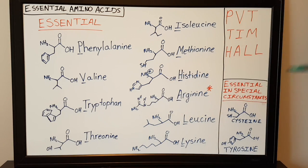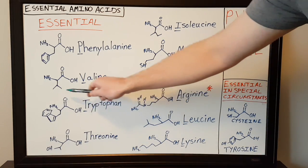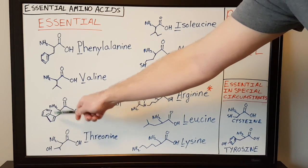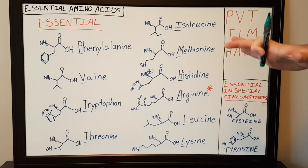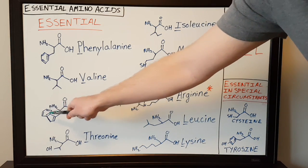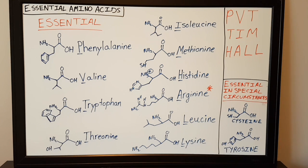The next one is tryptophan. Tryptophan has that classical amino acid backbone and it has an indole ring attached to it — a five-membered ring fused with a benzene ring. So tryptophan has a side chain that consists of a five-membered ring attached to a benzene ring.